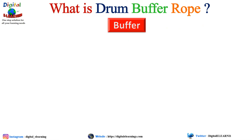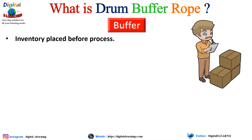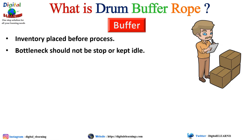The Buffer is inventory placed before the process to make sure the process never runs out of stock or sits idle due to lack of material, keeping it utilized 100%. The bottleneck should not stop or be kept waiting for material. That is why we have buffer before the drum. The buffer is directly related to lead time, and its purpose is to absorb variability in the process.